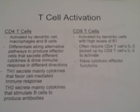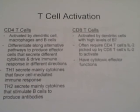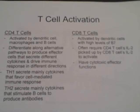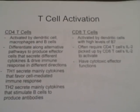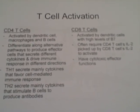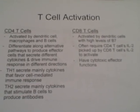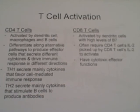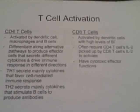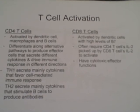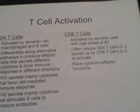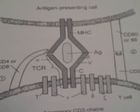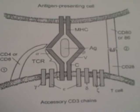CD4 T-cells can differentiate along alternative pathways to produce effector cells that secrete different cytokines and drive the immune response in different directions. CD4 Th1 cells secrete mainly cytokines that favor cell-mediated immune responses, whereas CD4 Th2 cells secrete mainly cytokines that stimulate B-cells to produce antibodies. Here is a diagram of the antigen-presenting cell.